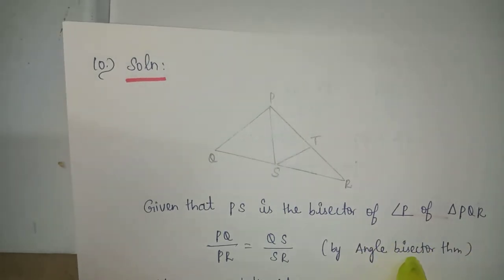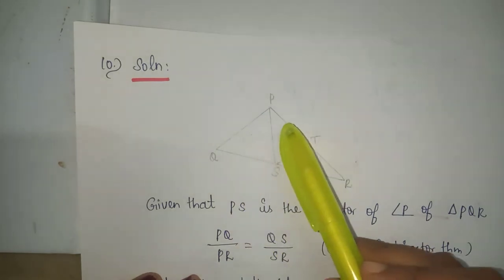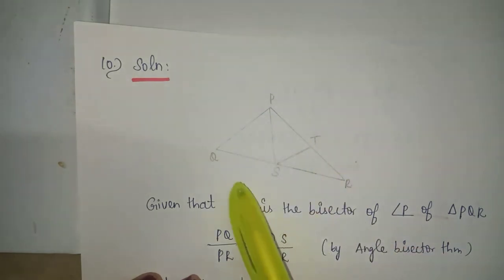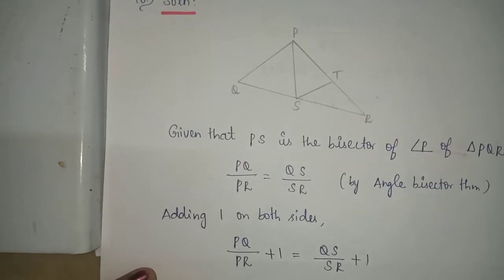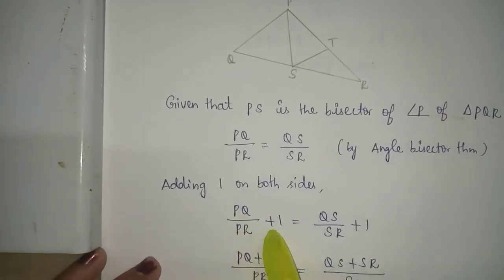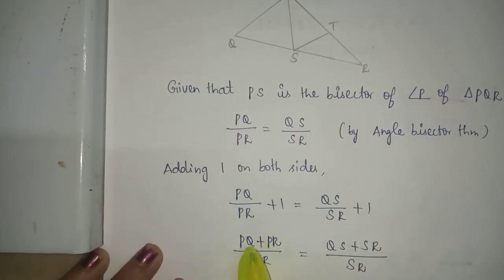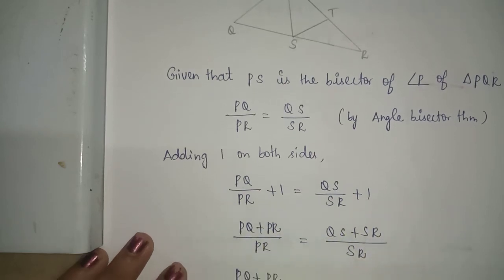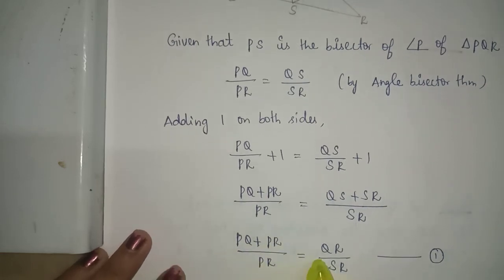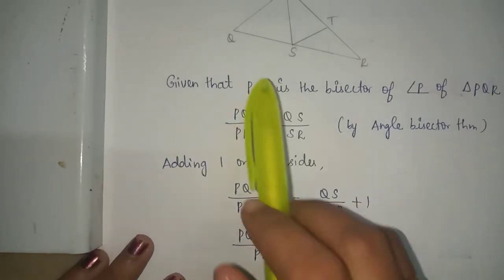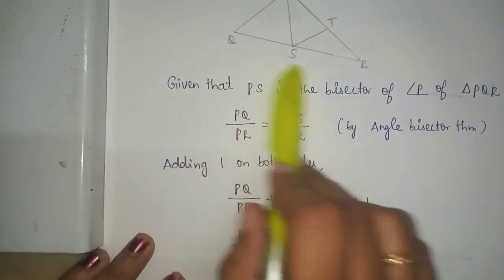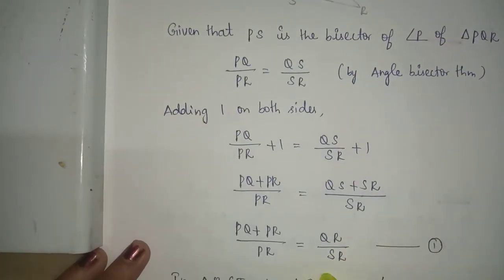By using the angle bisector theorem, PQ by PR is equal to QS by SR. Adding 1 on both sides: PQ by PR plus 1 equals QS by SR plus 1, which gives (PQ plus PR) by PR equals (QS plus SR) by SR. Since QS plus SR equals QR, we get (PQ plus PR) by PR equals QR by SR — equation 1.